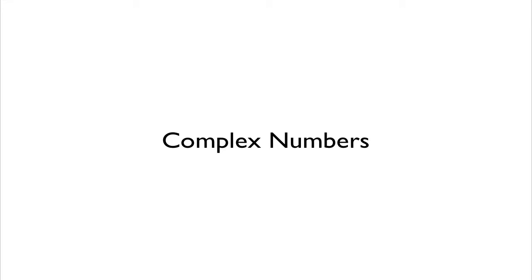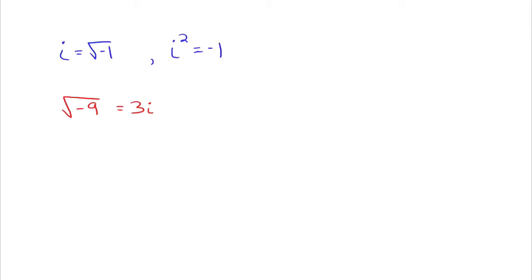In this video I would like to talk about complex numbers, but first recall the previous video where we were introduced to the imaginary unit. i is the square root of negative 1 — it's the imaginary unit — and once we made that definition, i squared was the same thing as negative 1. That allowed us to take the square root of negative numbers, so the square root of negative 9 goes to 3i.